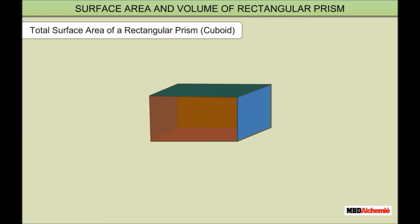The outer surface of a rectangular prism is made up of six rectangles. Let L be its length, B be its breadth, and H be its height.